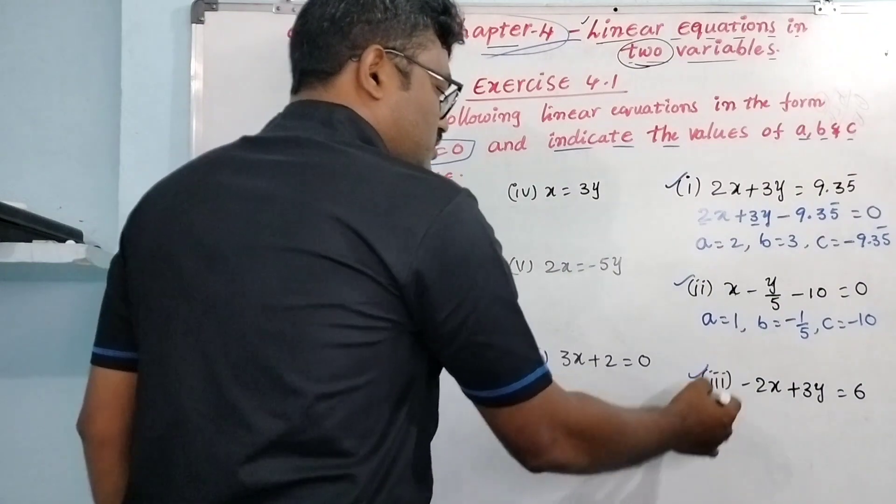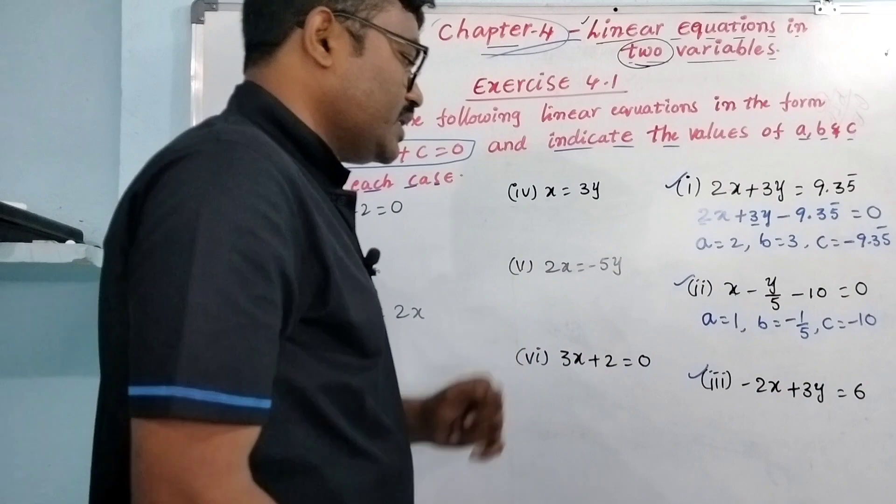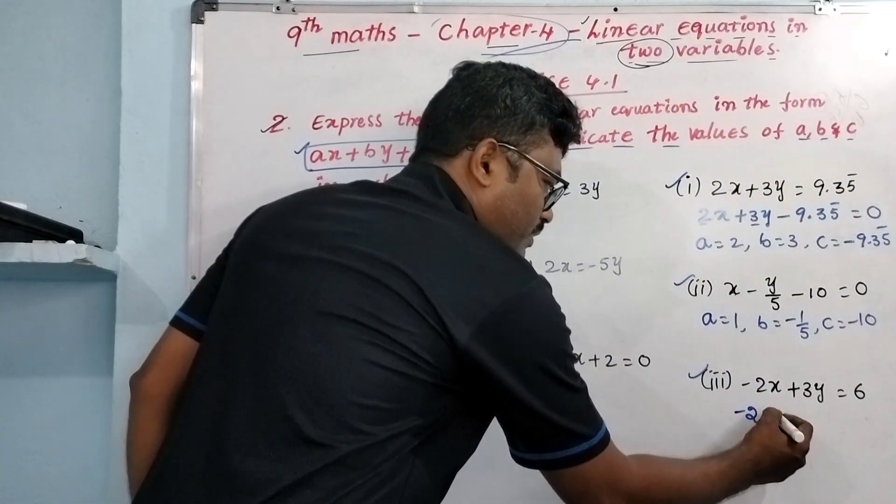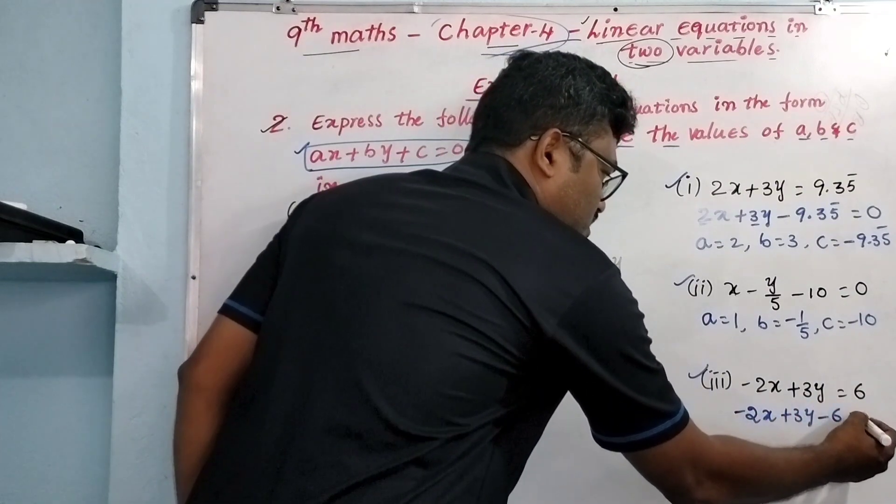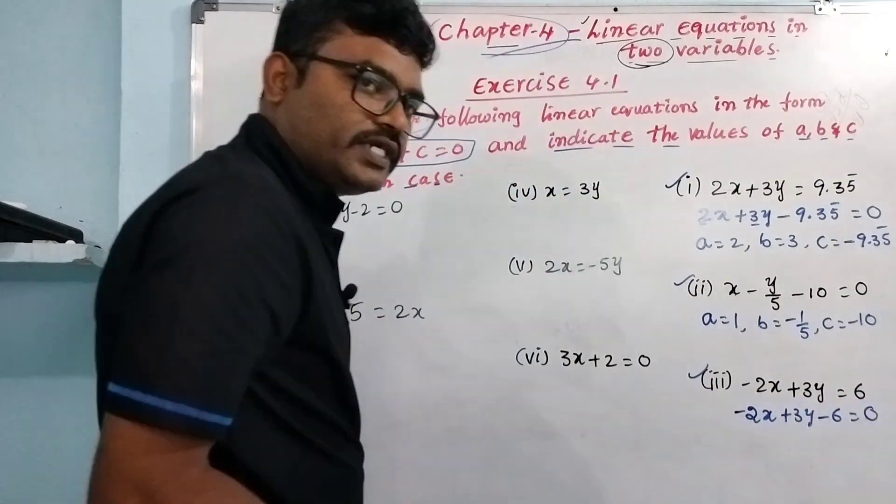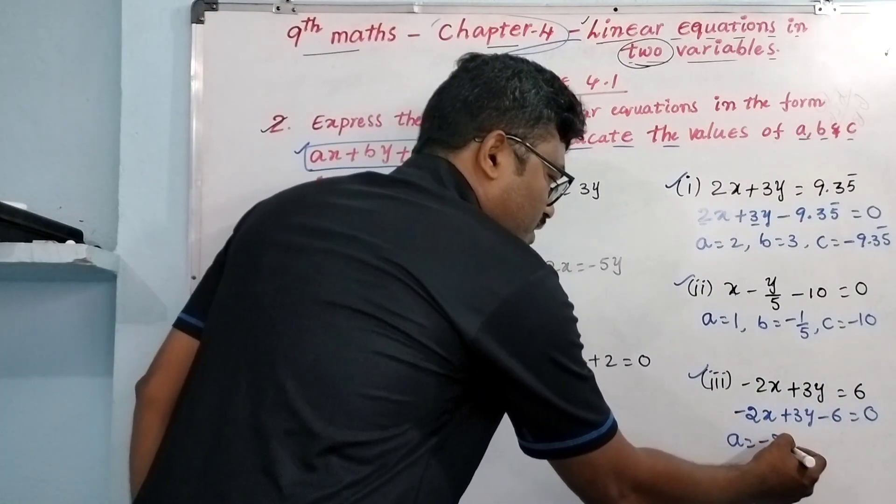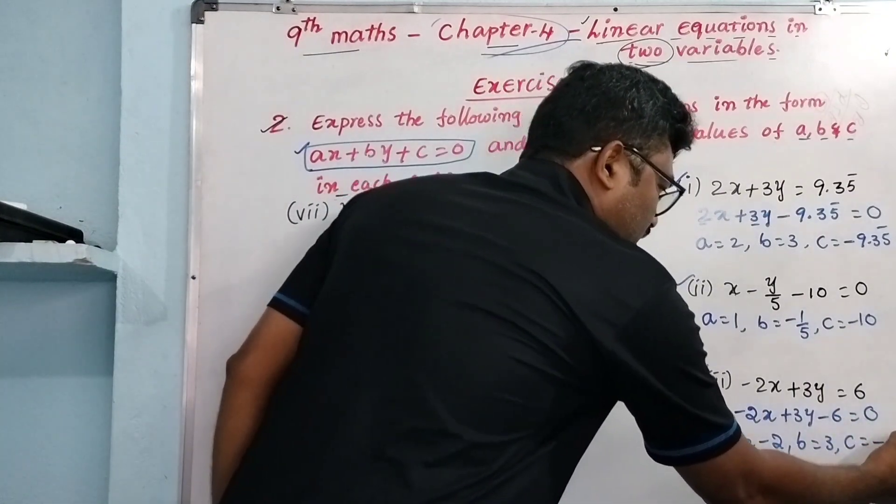Third one: minus 2x + 3y = 6. To convert to standard form: minus 2x + 3y, transpose 6 to get minus 6, equals 0. Therefore, A is minus 2, B is 3, and C is minus 6.